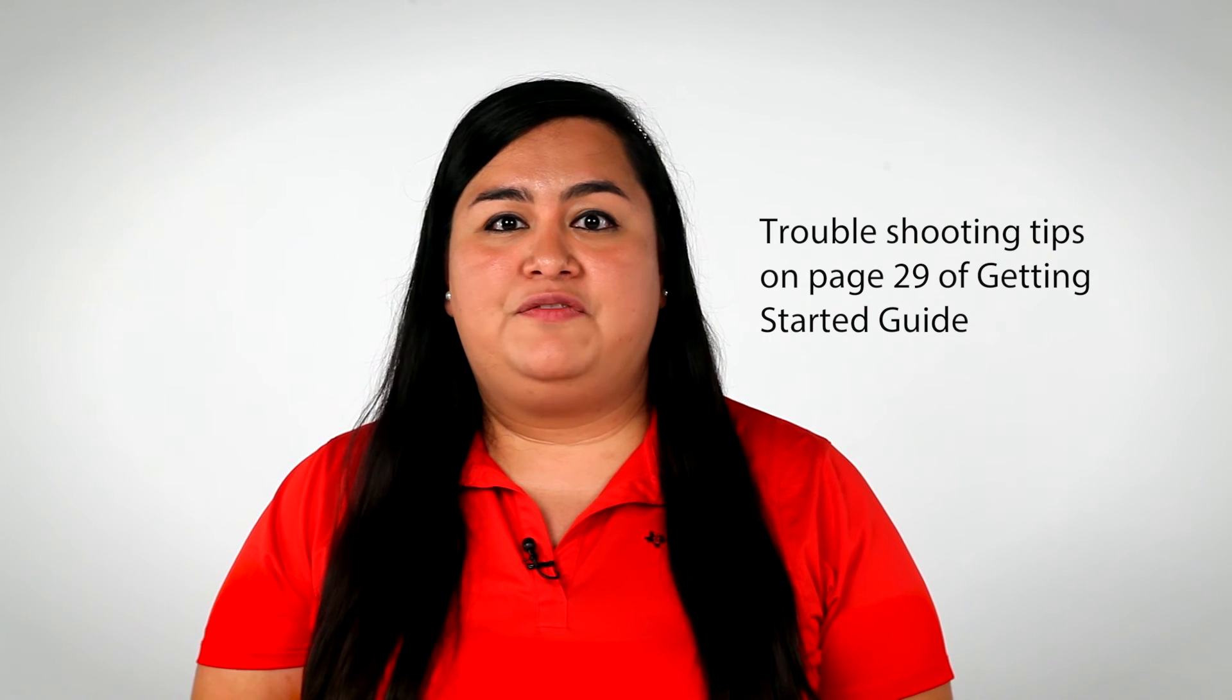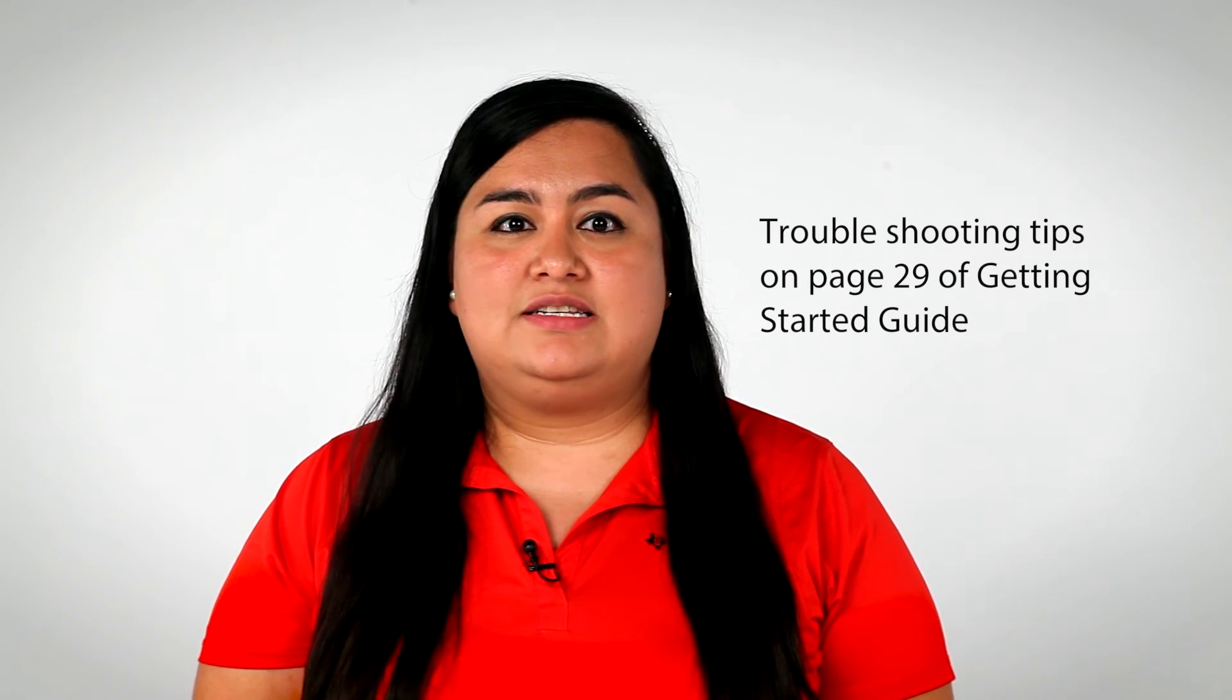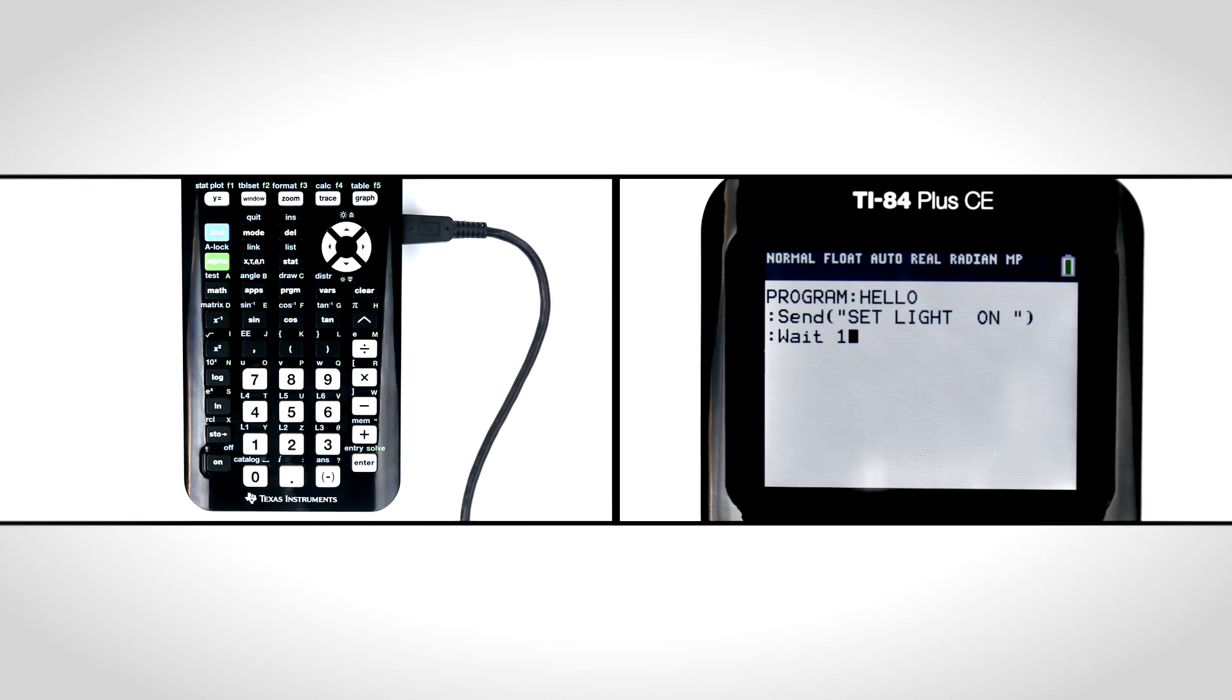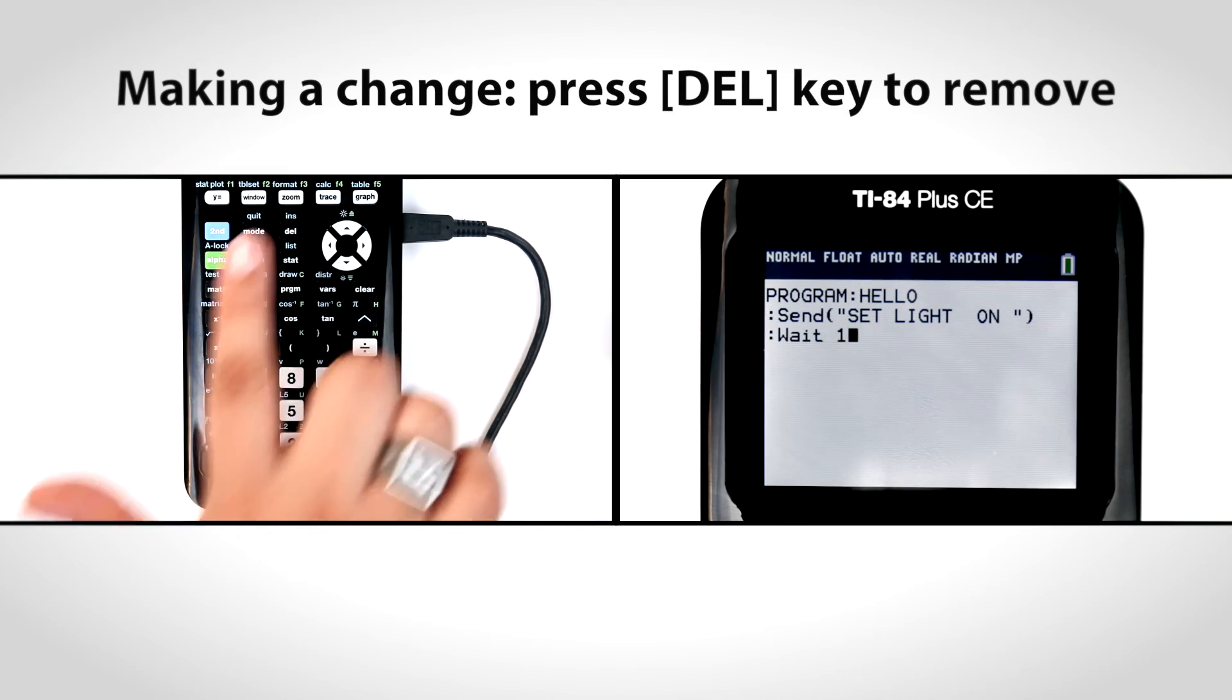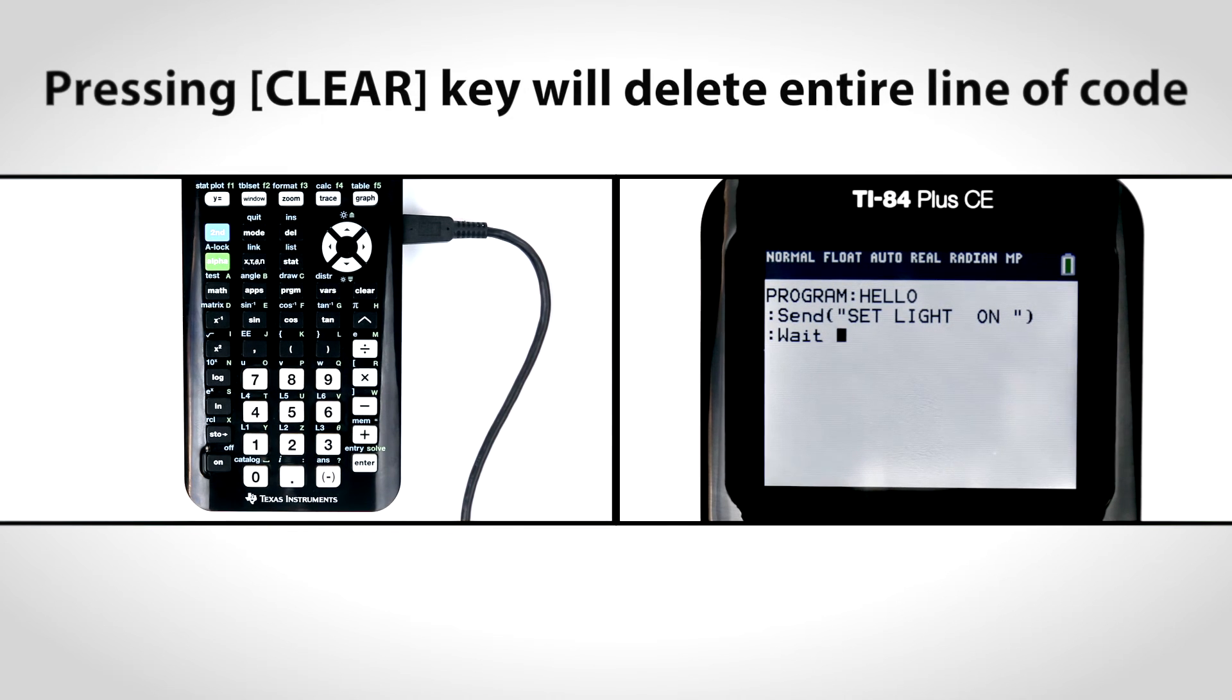Now, for a few tips and tricks to help your students get the most from their coding experience. Tip 1: If you enter something that you want to change, press the delete key to remove it. If you press the clear key, it will delete your entire line of code, which you probably don't want to do.